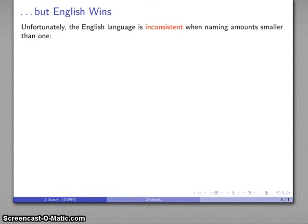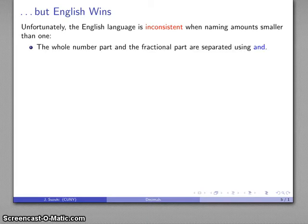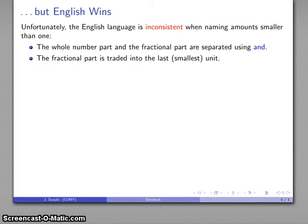Except English wins. Unfortunately, English, as well as all other natural languages, is very inconsistent when we name amounts smaller than one. And how we do that is the following. We identify the whole number and the fractional part. We split them using the word and.